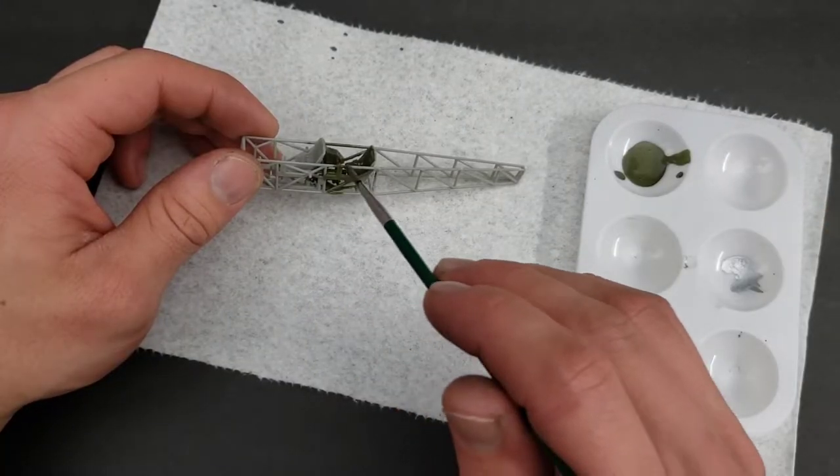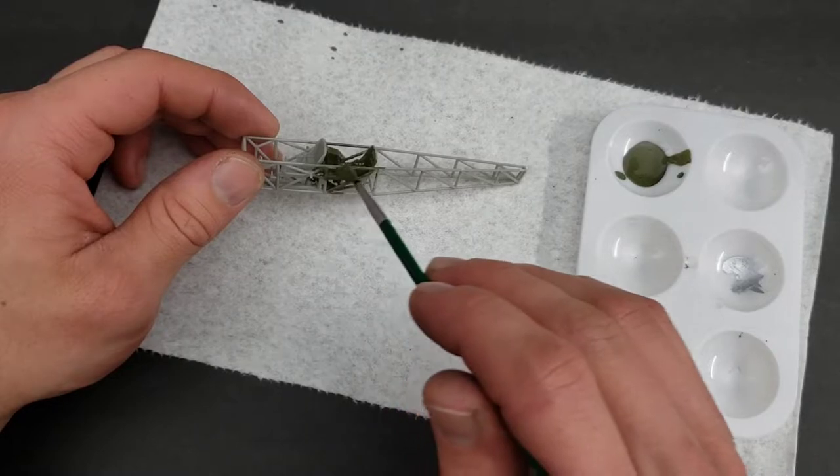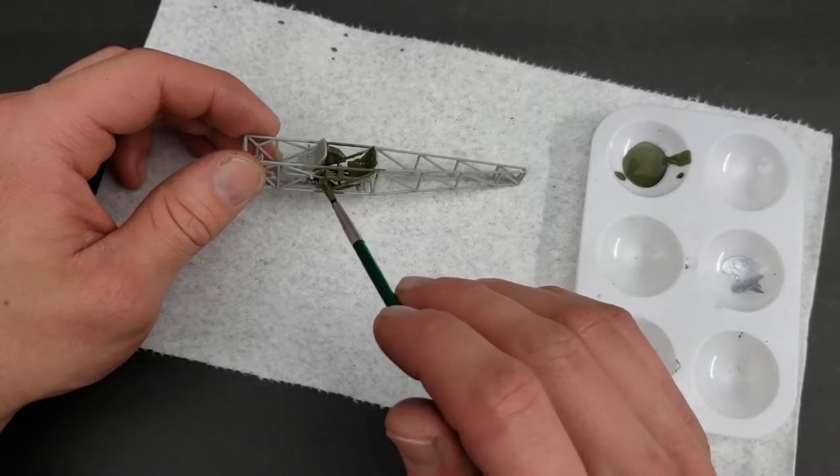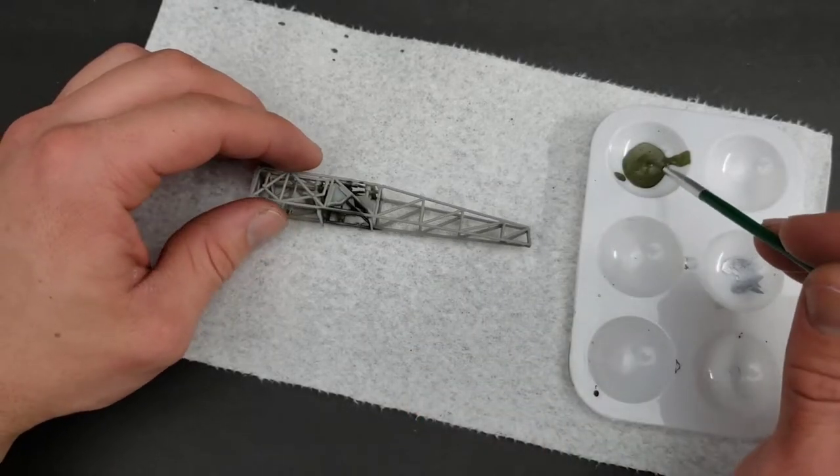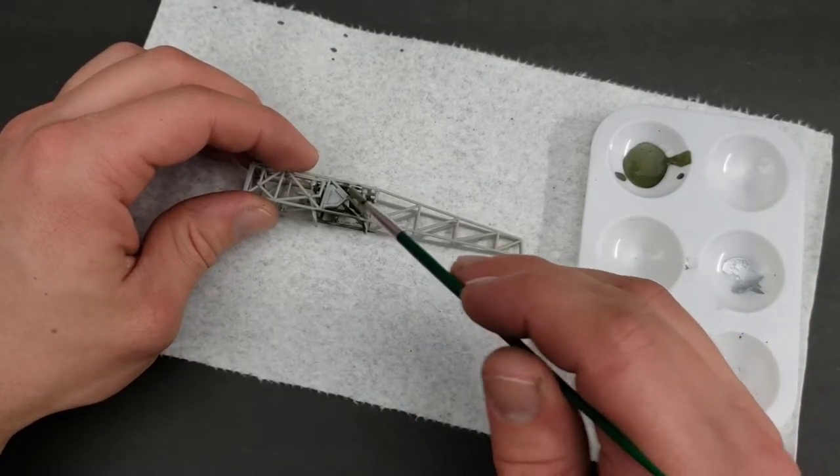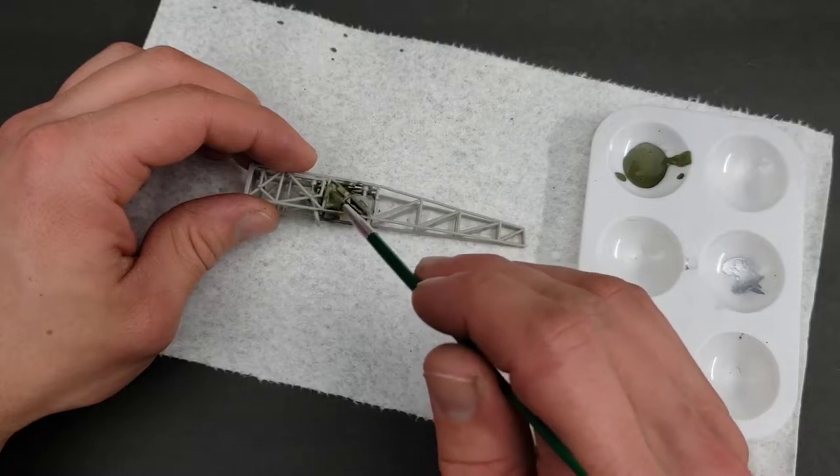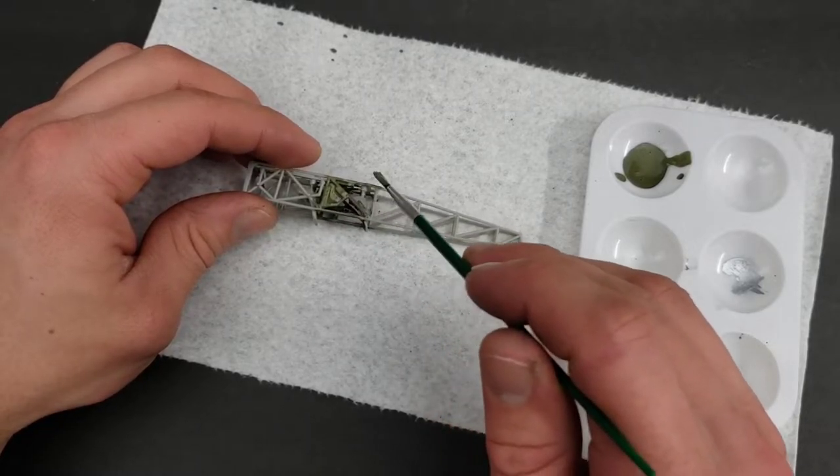Just be delicate and be patient if you're going to brush paint your model. Now of course you could always airbrush your model and it could go faster. I just chose for the beginner series to paint the inside of this thing, get it done in a day, and then move on to the next step.